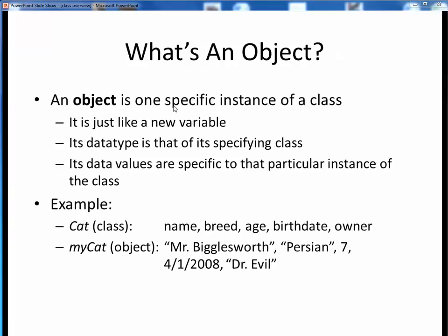An object, by contrast, is just one specific instance of a class. It's like a new variable whose data type is simply that of its describing class. Remember that we said earlier that every variable needed to have some data type. One way to think of a class is as a user-created new or extended data type above and beyond the eight fundamental data types we've already seen. The data values of an object are specific to that one particular instance of that class.